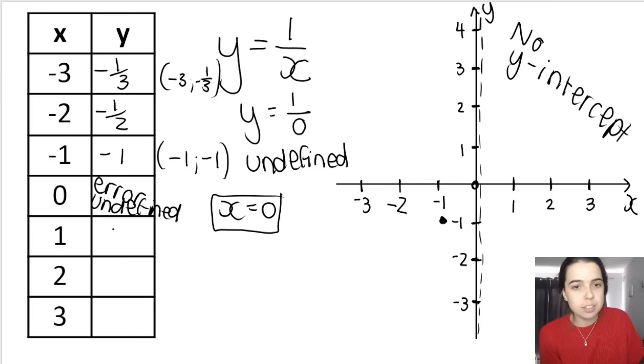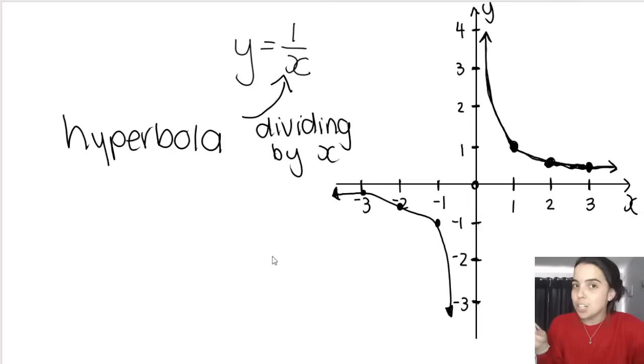If I continue filling this table in, we're going to get positive 1, positive 1 half, and positive 1 third. I can then take these coordinates, plot it on the graph, let's join the points and see what the shape of the hyperbola looks like. So there we go, we've got our basic shape of our mother function. However, I've forgotten to draw in the two very important asymptotes.